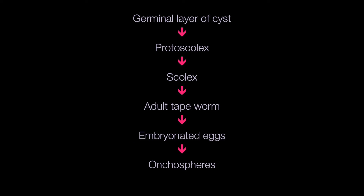Briefly, the germinal layer of the Hydatid cyst and daughter cysts produces protoscolices, which develop into scolices, which in turn develop into adult tapeworms. The final segment of the adult tapeworm — which is composed of three segments — breaks off to produce embryonated eggs, and these embryonated eggs develop into onchospheres. The onchospheres then develop into Hydatid cysts.